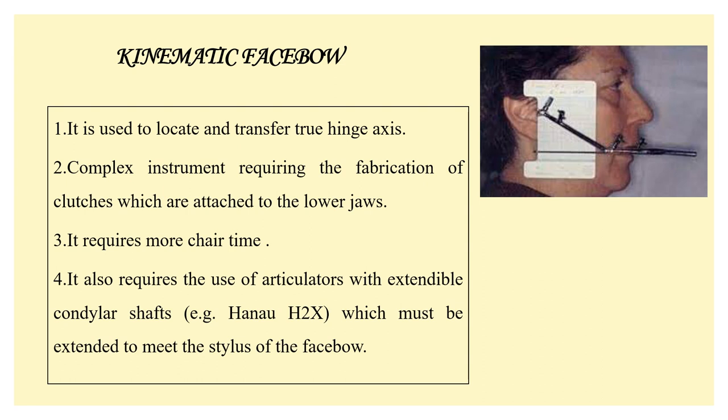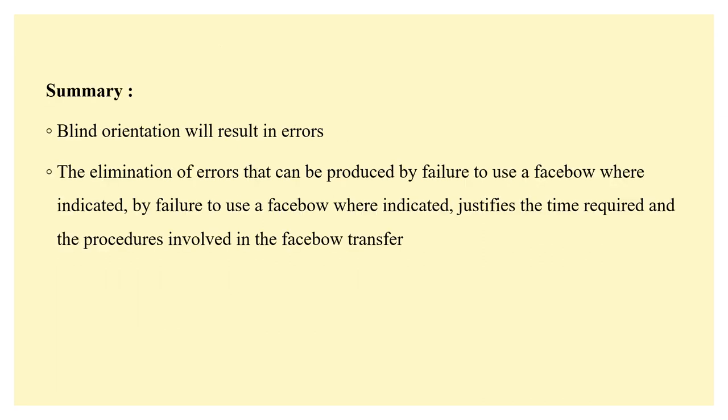The kinematic face bow is mainly used to locate and transfer the true hinge axis. It is a very complex instrument that requires a lot of chair-side time. A graphic plate is attached in front of the external auditory meatus, and a bite form placed in the patient's mouth is connected to a stylus. When the patient makes different kinds of movements, the movements of the mandible are recorded on the graphic plate, and from that graphic plate you locate the true hinge axis.